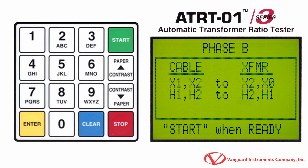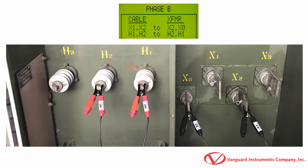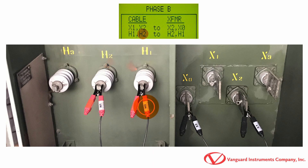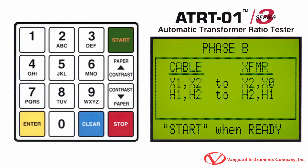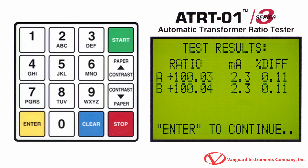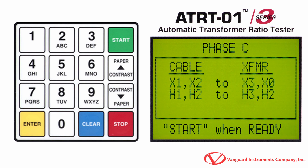Now we'll follow the on-screen instructions to make connections for testing phase B. We'll connect the unit's X1 cable to the transformer's X2 terminal and the unit's X2 cable to the transformer's X0 terminal. Then we'll connect the unit's H1 cable to the transformer's H2 terminal and the unit's H2 cable to the transformer's H1 terminal. Now press the Start key to perform the test. After a few seconds, the test results for phase B will be displayed below the phase A results. Press the Enter key to continue.